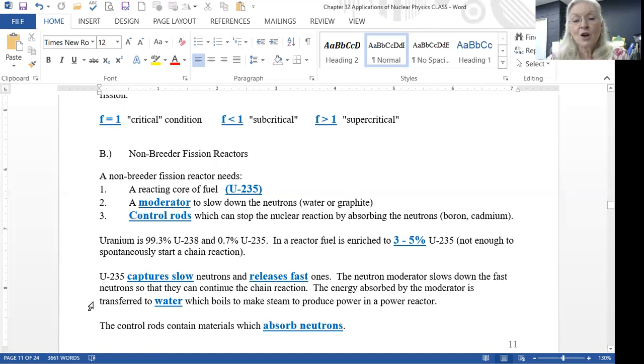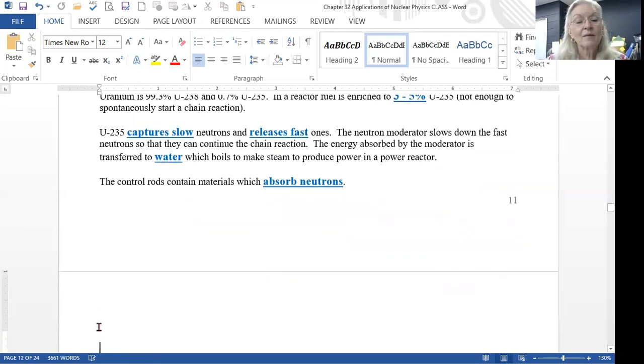So in the slowing down, when the moderator slows down, the energy that it removes from the neutron actually is absorbed by water. And then that water, that heat energy is absorbed by different water, which boils to make steam to produce the power to produce the electricity. And again, the control rods absorb the neutrons.